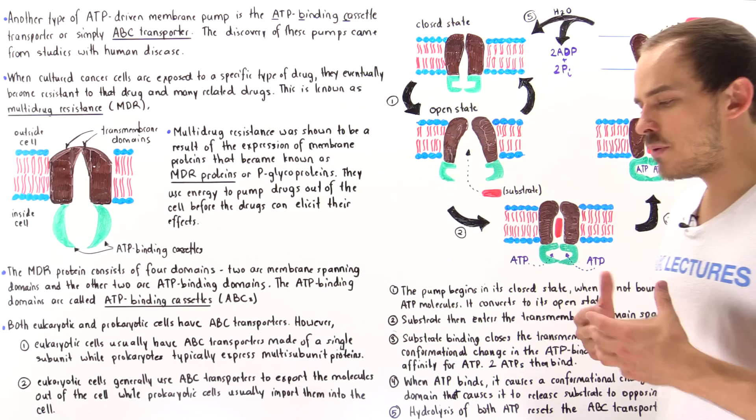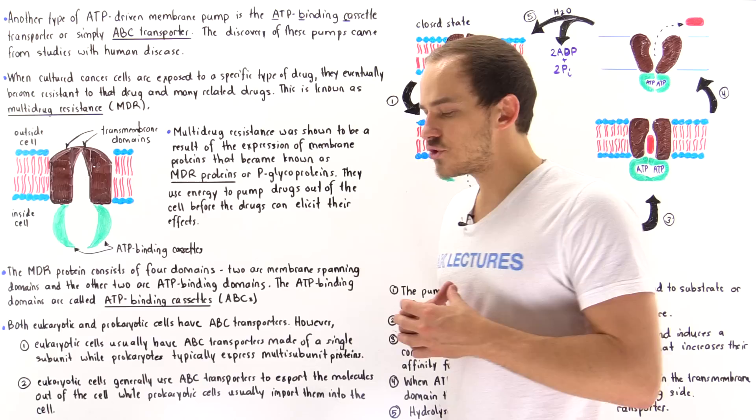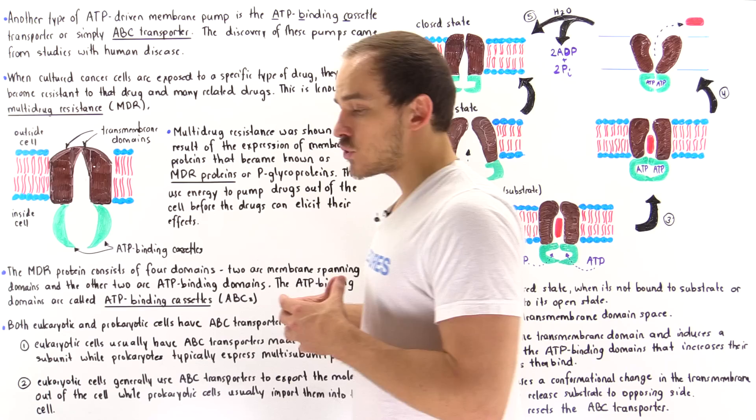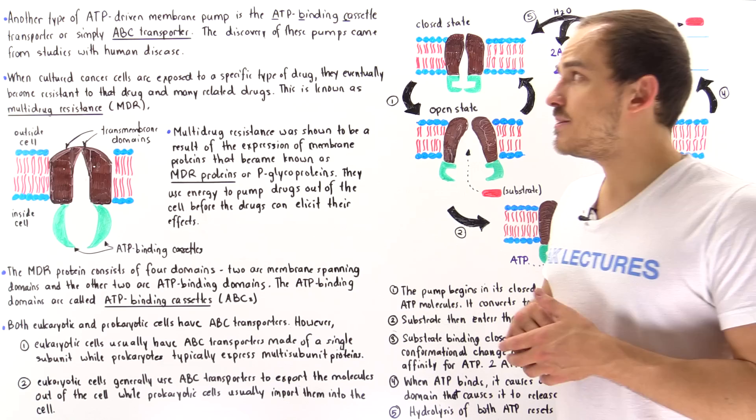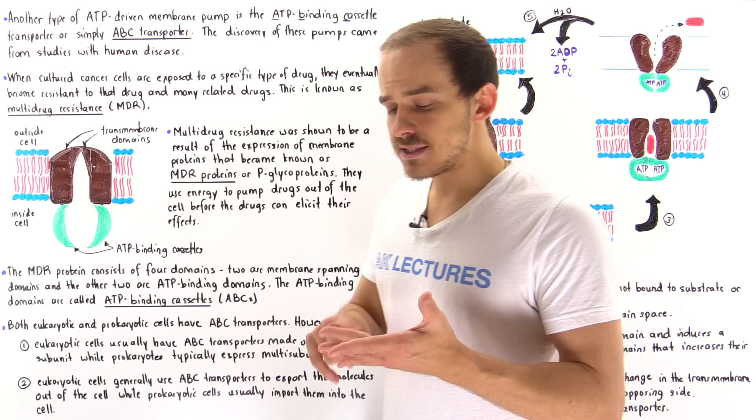Previously we focused on P-type ATPases, which are protein pumps that use ATP to create electrochemical gradients across the membranes found within our cells. Now another important group of ATP-driven pumps we're going to focus on in this lecture is the ABC transporters, where ABC stands for ATP binding cassette.